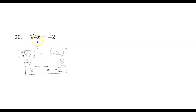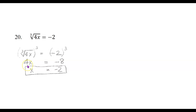Here we have a cube root, and we undo cube roots by cubing — by taking this to the third power. So if we take both sides to the third power, the cube root cubed would just be 4x. And negative 2 cubed — that would be negative 2 times negative 2 times negative 2, which is negative 8. Now divide both sides by 4 and we get x equals negative 2. That works because 4 times negative 2 is negative 8, and the cube root of negative 8 is equal to negative 2.